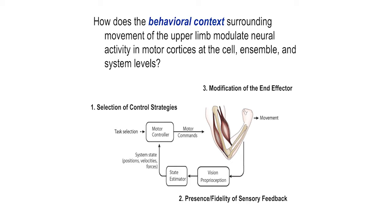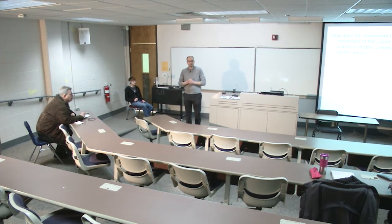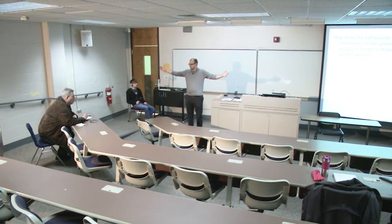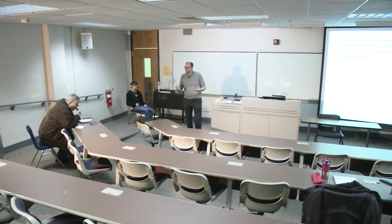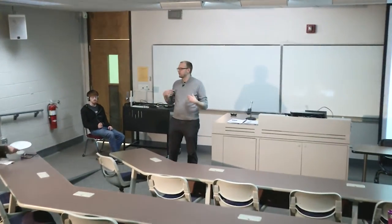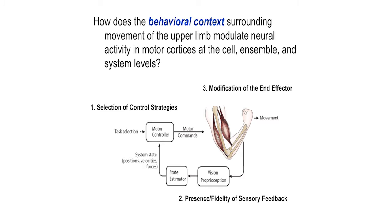Proprioception is the sense of knowing where your limbs are in space without seeing them. If you have the unlucky opportunity of having someone test your proprioception, they'll ask you to close your eyes and touch your nose. So the kind of research question I want to ask is to try and understand how the behavioral context surrounding movement of the upper limb changes neural activity in the parts of the brain that control movement.